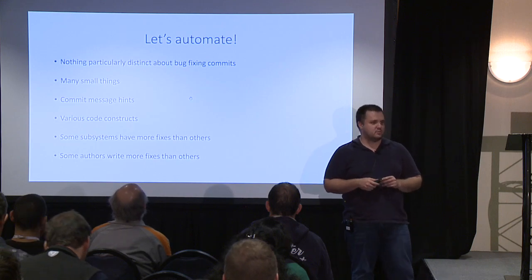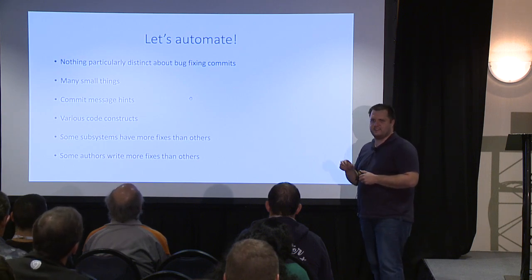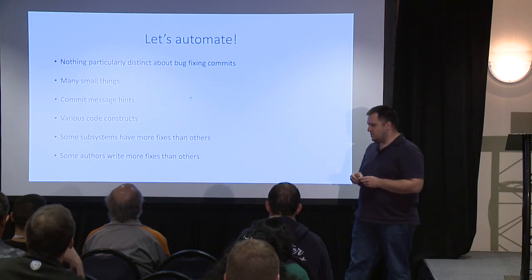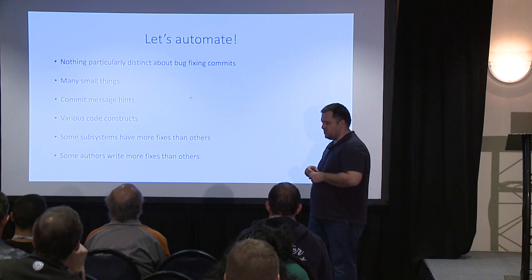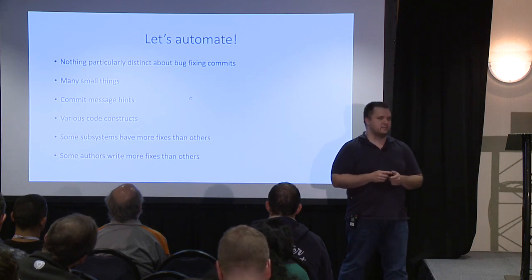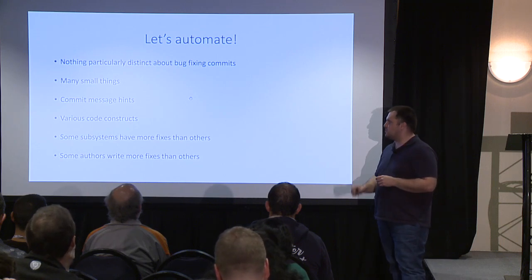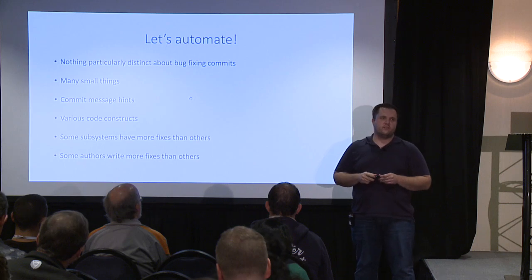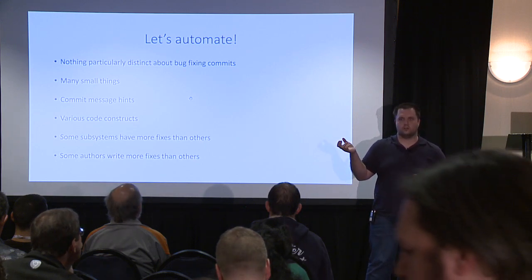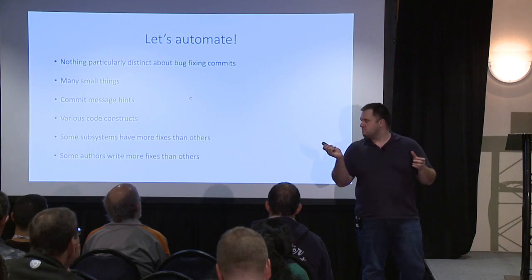So I figured, let's automate. This was my first try at catching more of these commits. I started looking at stuff like if a patch has the word 'fix,' then maybe it's a bug. But I started encountering a lot of issues because there's no single big identifier that says if a patch is a bug fix or not. There's no magical formula I can use. Instead, looking at many different patches, I started recognizing different constructs — several words in the commit message might indicate a bug fix, or the way code looks.